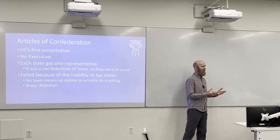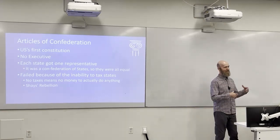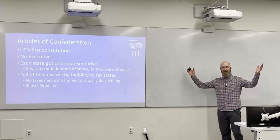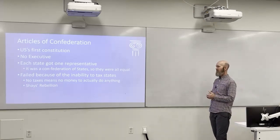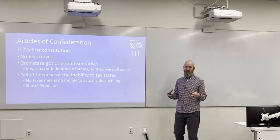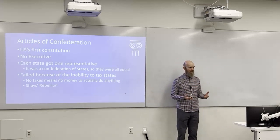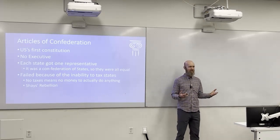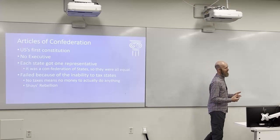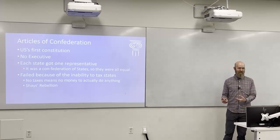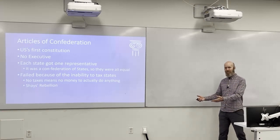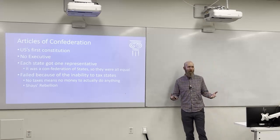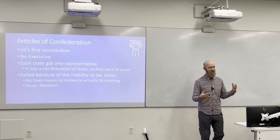In the Federation of Planets, each planet is still its own entity with its own culture and rules. Similarly, the Articles of Confederation had states coming together for common defense, but each state was still independent. In most of the world, a 'state' means a country. The reason they're called states in the United States is because originally the 13 colonies separated from England and each formed their own state — effectively their own country — before coming together as a confederation.